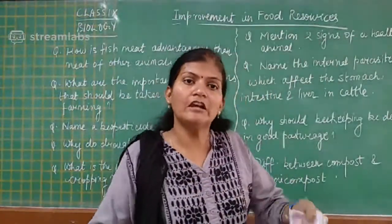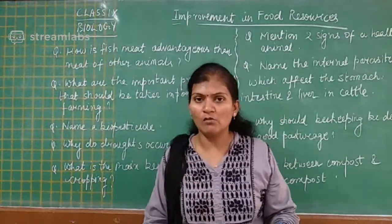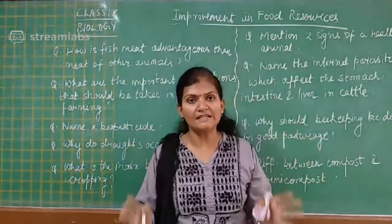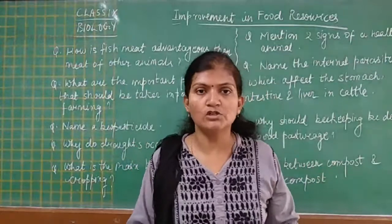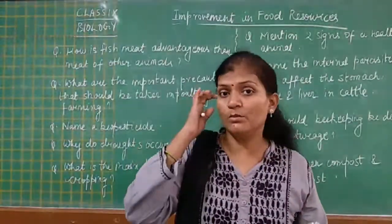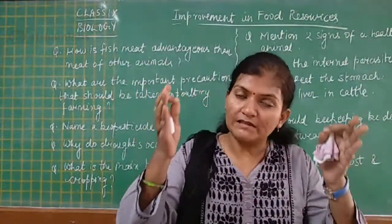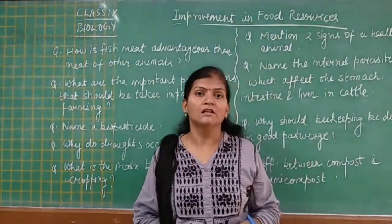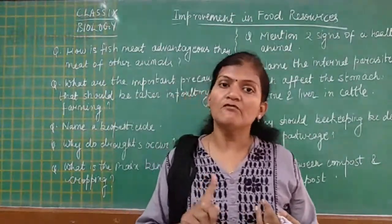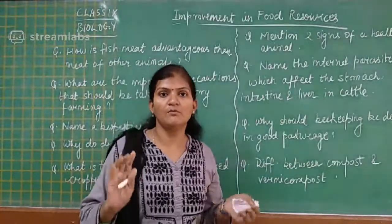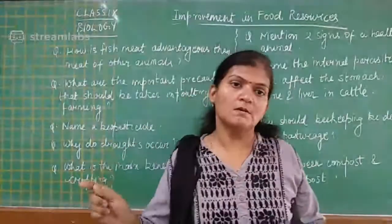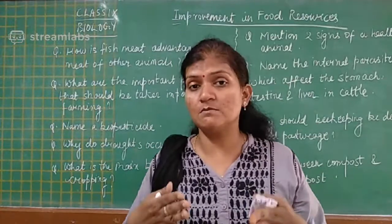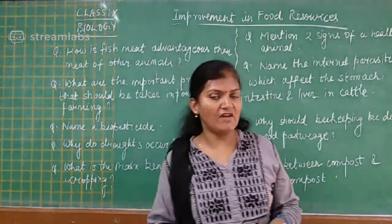Different feeds are given depending on whether the birds are broilers or layers. The place where they are kept should have proper lighting and proper temperature — neither too low nor too high — so conditions are maintained for them to easily live and have a proper diet. Proper and timely vaccination should be provided to all poultry birds to decrease the chances of disease.